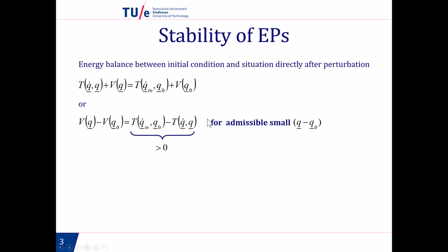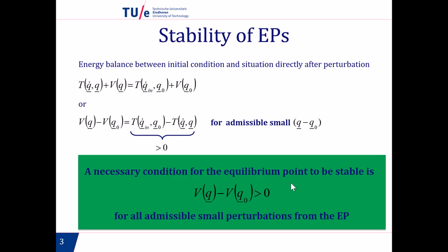The definition of stability says that for a small value of q minus q-zero, the difference between the initial kinetic energy perturbation and the kinetic energy after the perturbation has to be positive. Therefore, the necessary condition for stability is that the potential energy after the perturbation minus the potential energy at the equilibrium position has to be larger than zero. In other words, the potential energy should tend to increase when we give a perturbation.